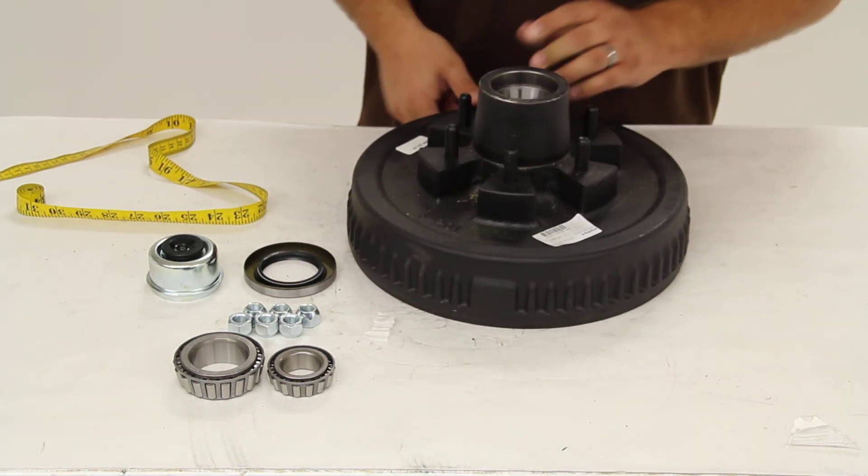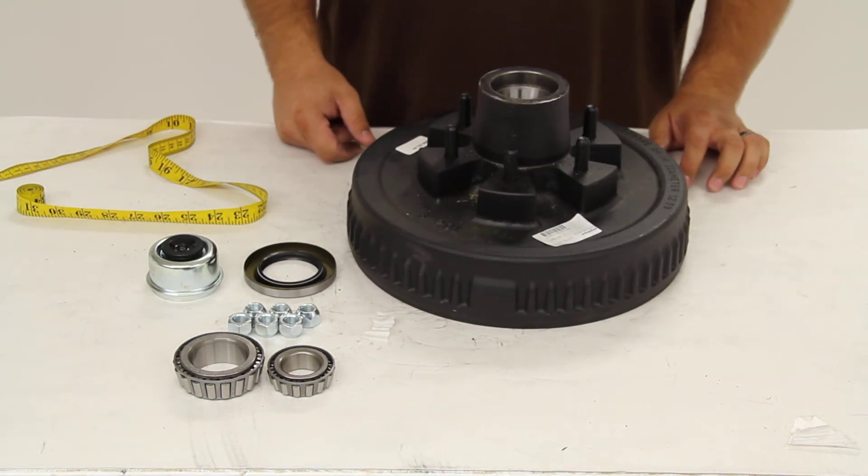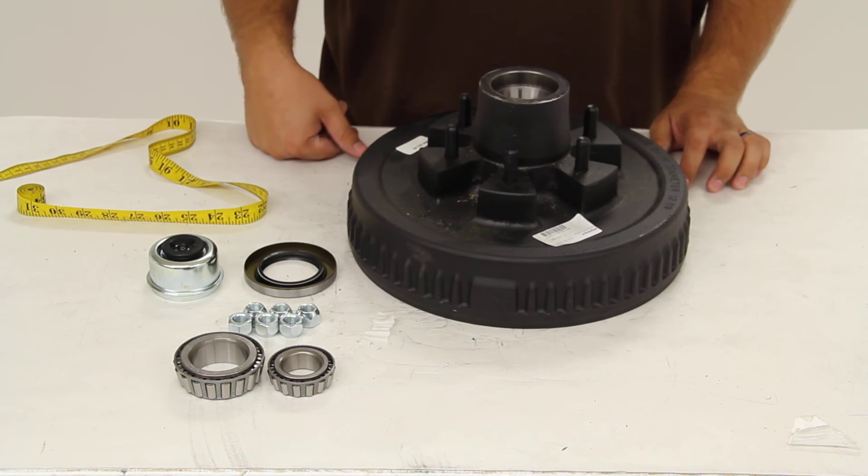And that's it for a quick look at Dexter Axle's trailer hub assembly, part number 8-201-9UC3-EZ.